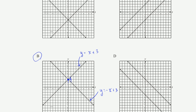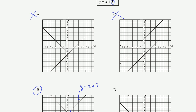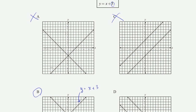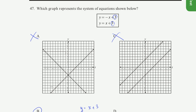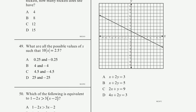So our answer is B — these are the two equations we have. And choice D: both of those lines have the same slope, so clearly it doesn't apply to our two equations. They also have two different y-intercepts, so it's definitely not choice D.